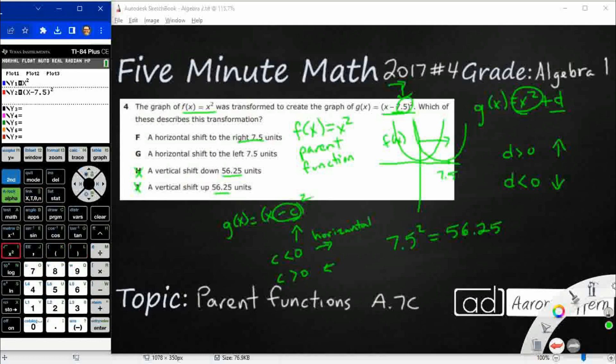So that addend, that negative addend is within the x, and then let's go ahead and graph that. So it's the red one that we're looking at here. And you notice how it gets shifted over to the right. And if we wanted to trace this other one right here, we could see that it is going to be at that 7.5 right there. So that is going to be our answer here. It's going to be F, a horizontal shift to the right, 7.5 units.